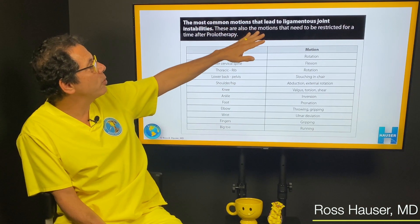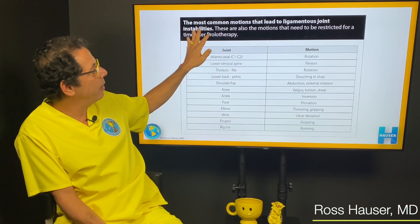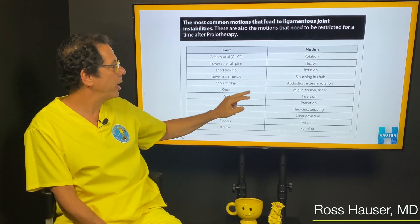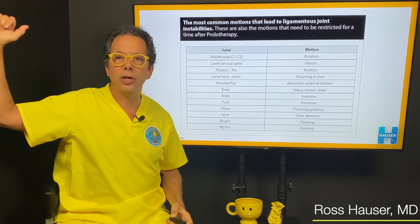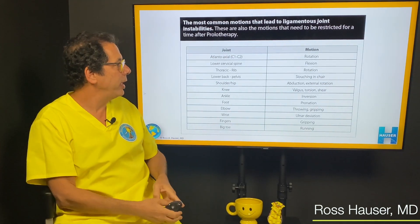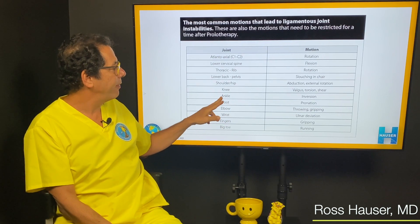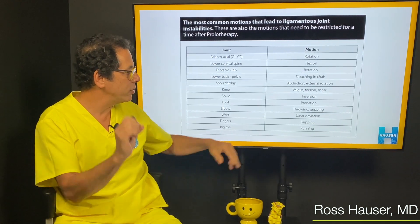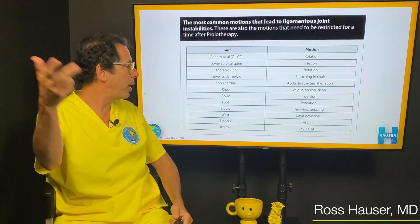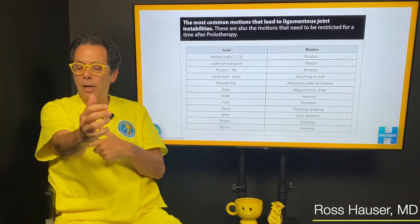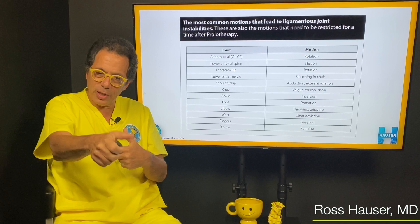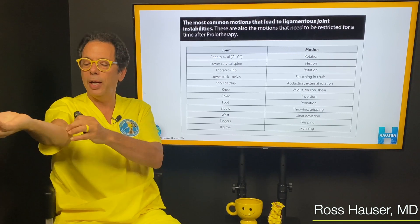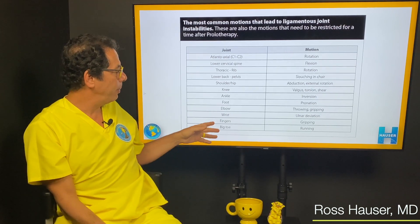This shows the most common motions that lead to ligamentous joint instability. In the thoracic area, it's rotation. In the lower back, it's slouching in a chair. The hip and shoulder — it's abduction and external rotation, which leads to ligament injuries. In the foot, if somebody over-pronates, and in the ankle it's usually inversion. Depending on which part of the elbow — the lateral part is going to be excessive pronation. And obviously pitching, throwing, or tennis playing puts a lot of strain on the ulnar collateral ligament medially.